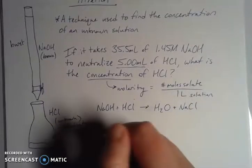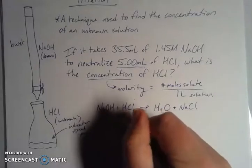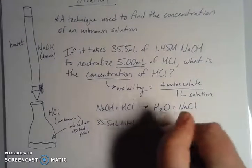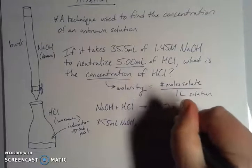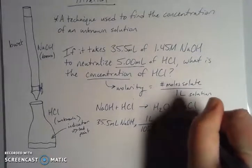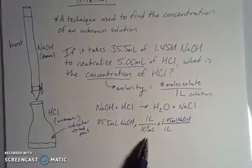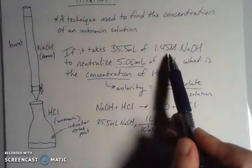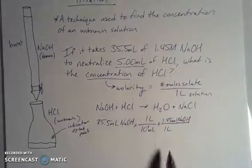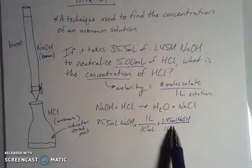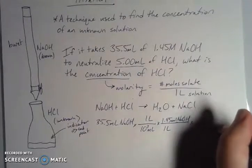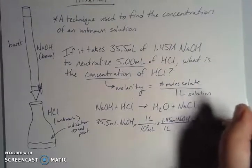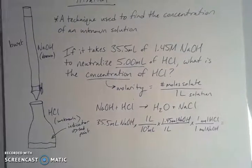I take my 35.5 mL of NaOH and set up the dimensional analysis: going from milliliters to liters — that's just metric conversion, 1000 milliliters in one liter — then liters to moles using the molarity of 1.45 moles of sodium hydroxide per one liter. I can write that as a ratio: 1.45 moles of NaOH per 1 liter. Then I can go from moles of NaOH to moles of HCl using the balanced chemical equation's 1:1 ratio.